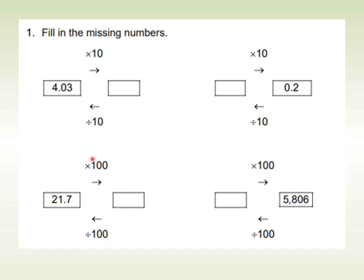Over here, multiply it by 100 and check that your answer gets back to 21.7 when you divide by 100. And here you've got to divide by 100 and then check that when you multiply that number by 100, you get back to 5,806. So fill in the missing number. Pause and have a go at that now and then I'll give you the answers.